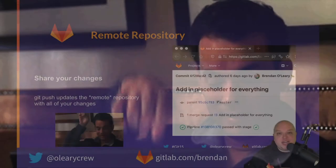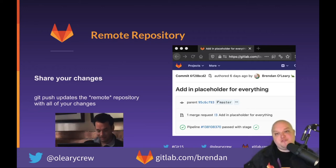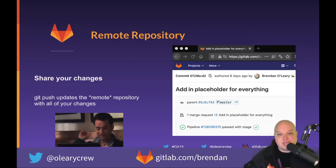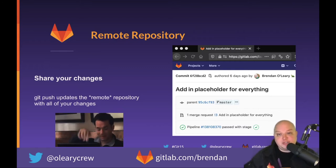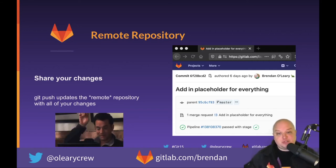Once you're ready to share your changes with the world, all you have to do is update the remote repository from your local one. Git push automates that process, allowing the changes you've made or are proposing to be seen by your whole team. That also makes a backup of sorts of all your committed changes, in the sense that they are now on the remote server as well as on your computer.